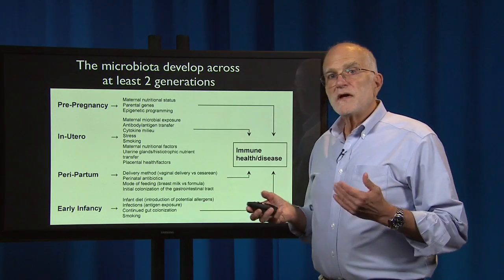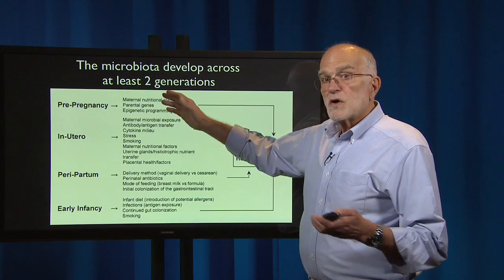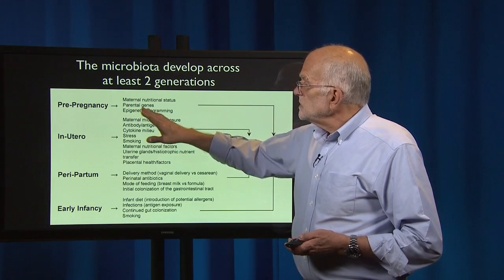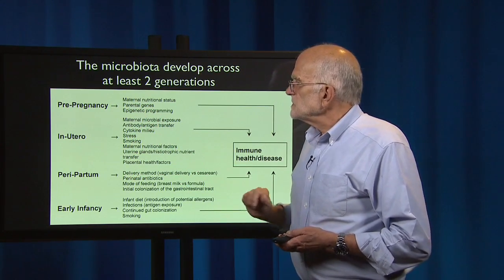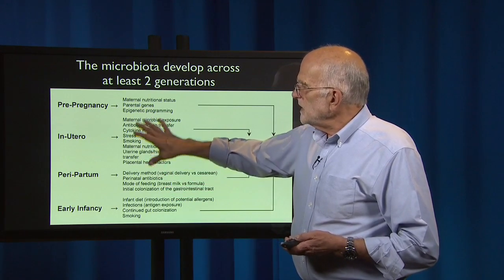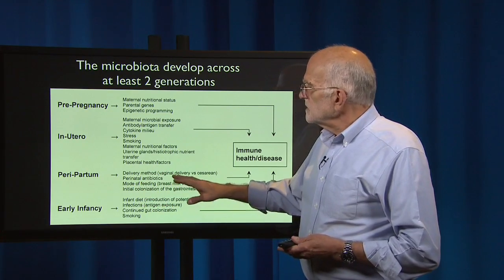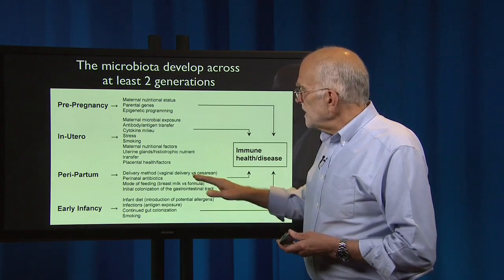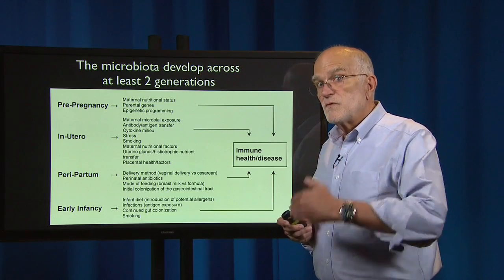That microbiota develops across at least two generations. Before pregnancy begins, the maternal environment is affecting her microbiota, and her own genes are affecting her microbiota. She develops her own gut community. Then, in utero during pregnancy, whether or not she's stressed or smoking, what kind of food she is eating, and what factors might be affecting her placenta can all affect her own microbiota. During delivery, the delivery method determines which particular ecosystem of bacteria gets transferred to the infant. Vaginal delivery versus cesarean is very important, as is whether antibiotics are being used perinatally.